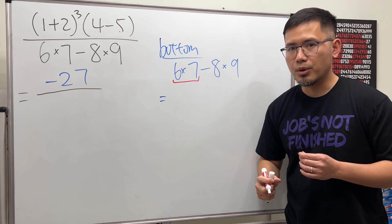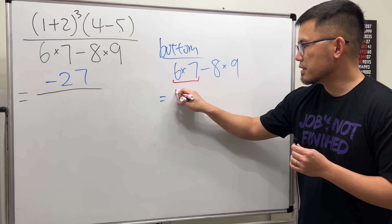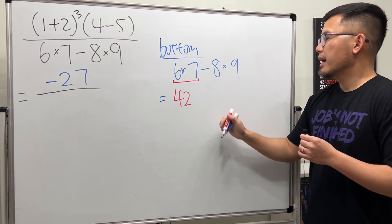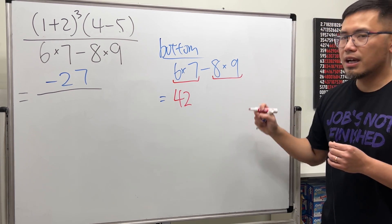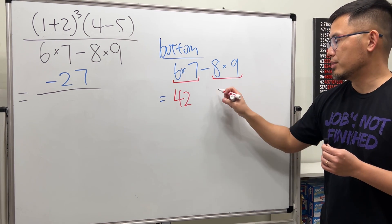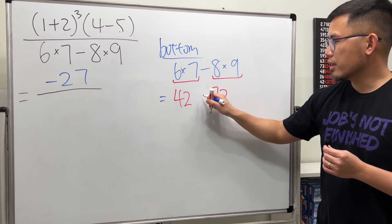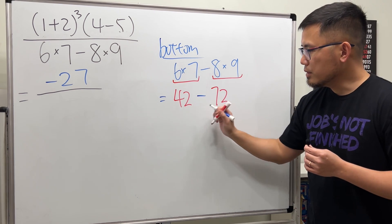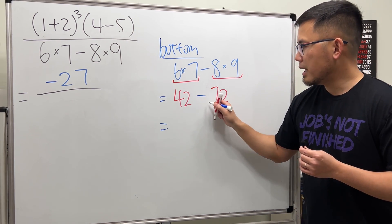So look at 6×7, and of course know your times table. 6×7 gives us 42. And then 8×9, it's a multiplication, multiply that. Know your times table, we get 72. And then bring down the minus.